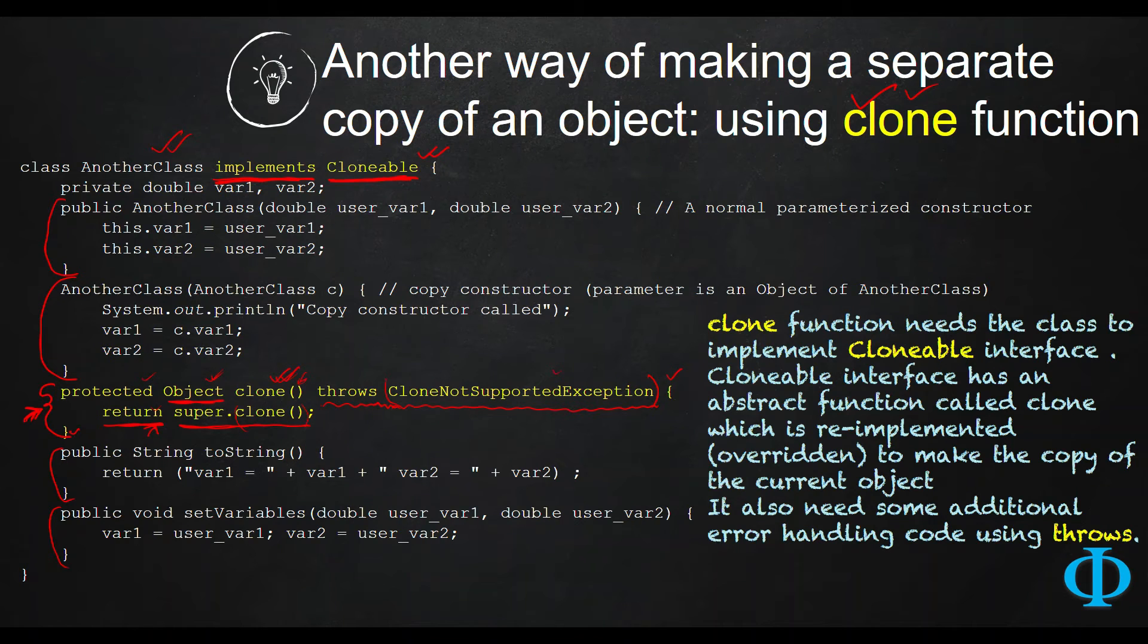You may now think, why is this method so important? Because the copy constructor method was very direct. It was just copying each of the fields one after another and it was very easy to understand. So why do I need to make everything complicated?